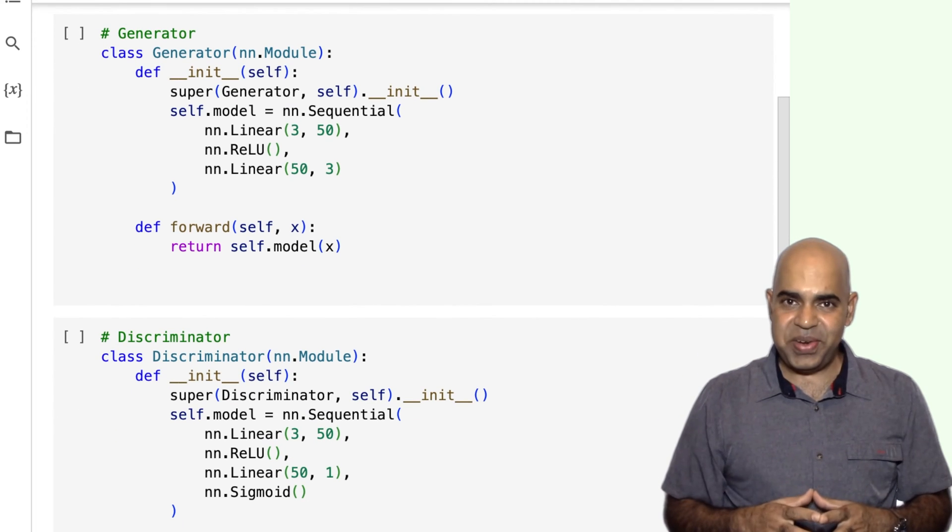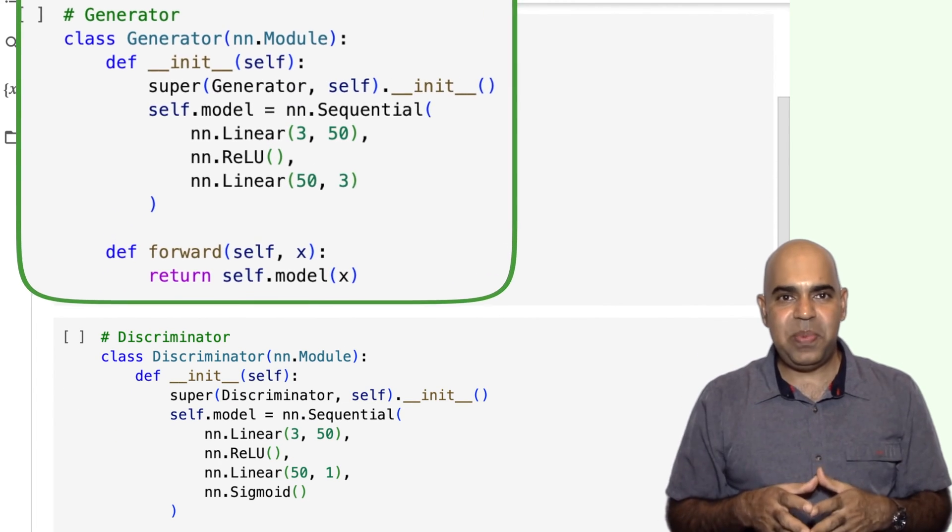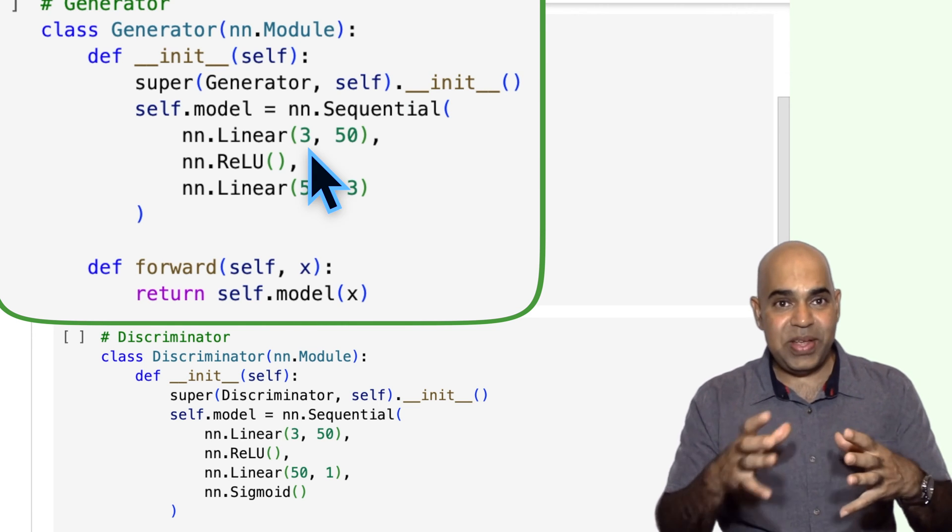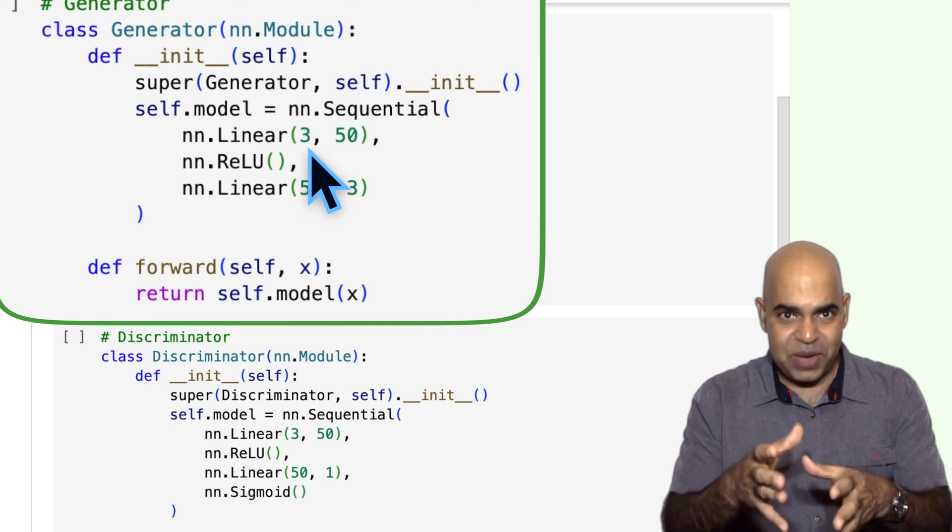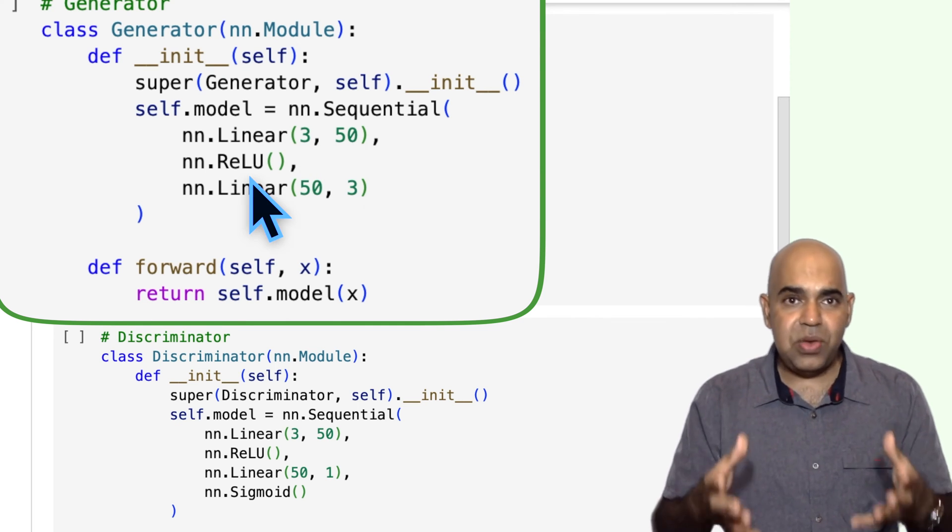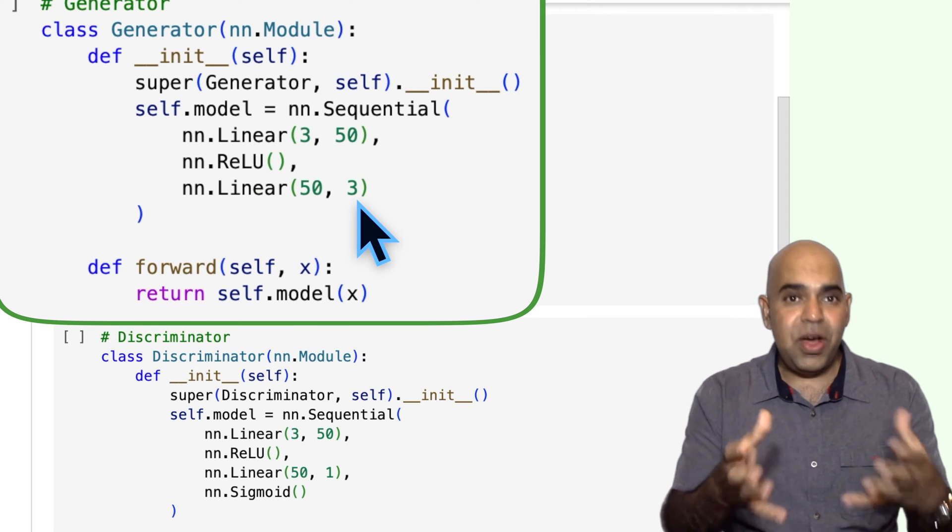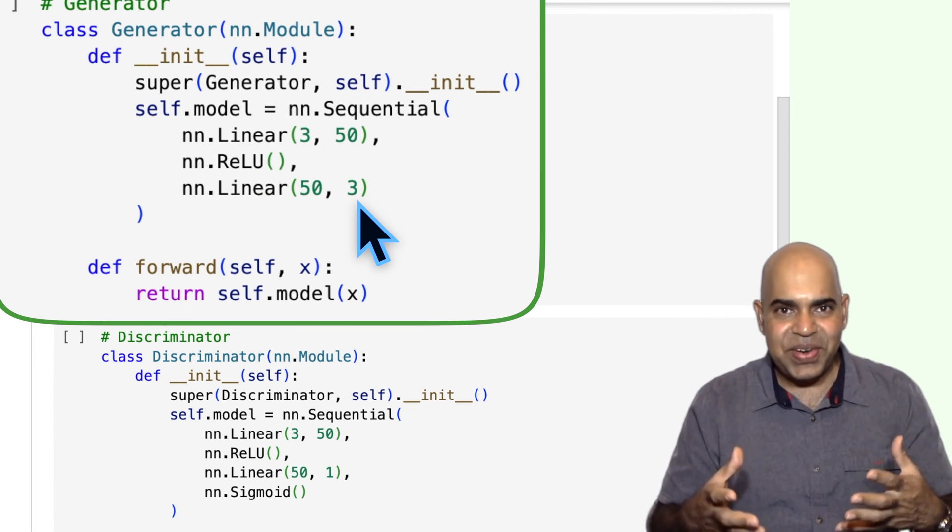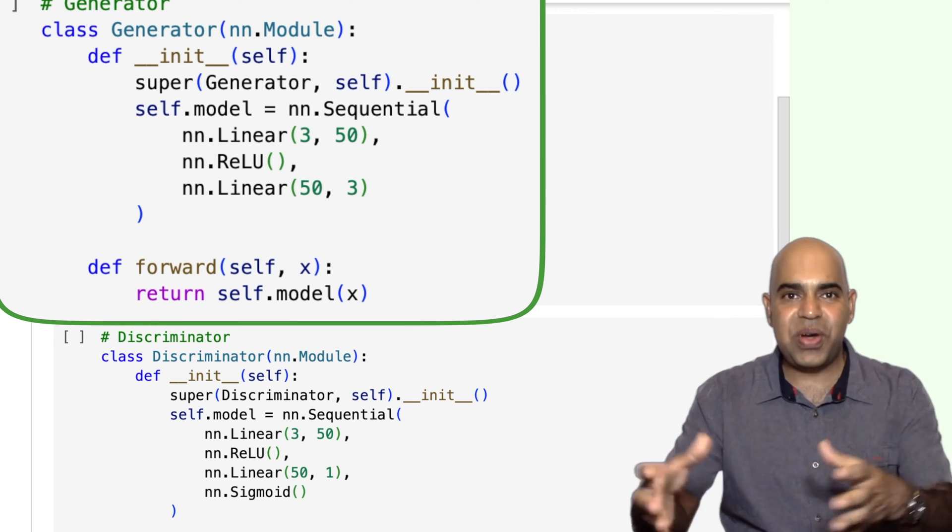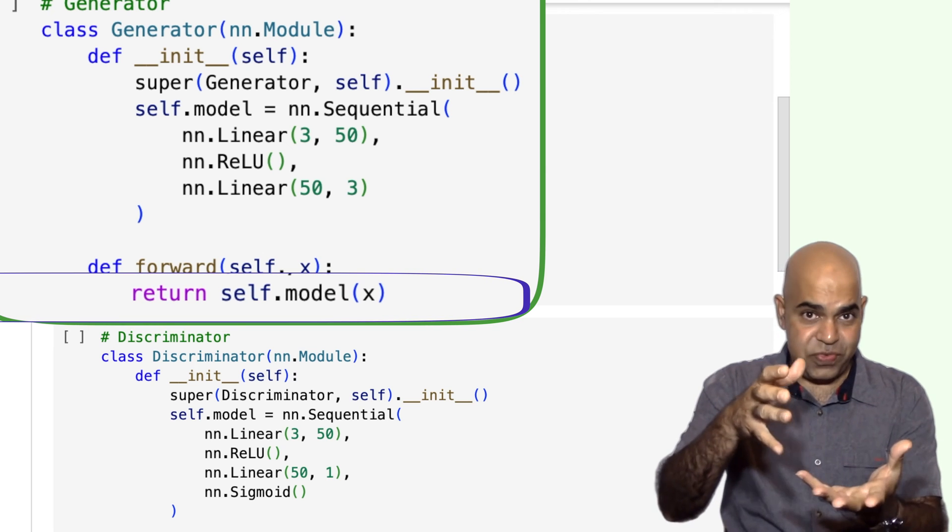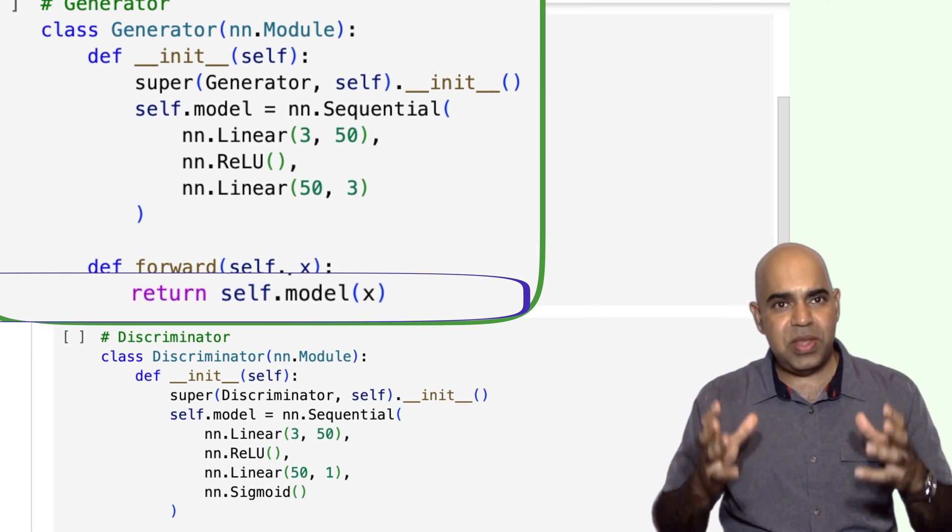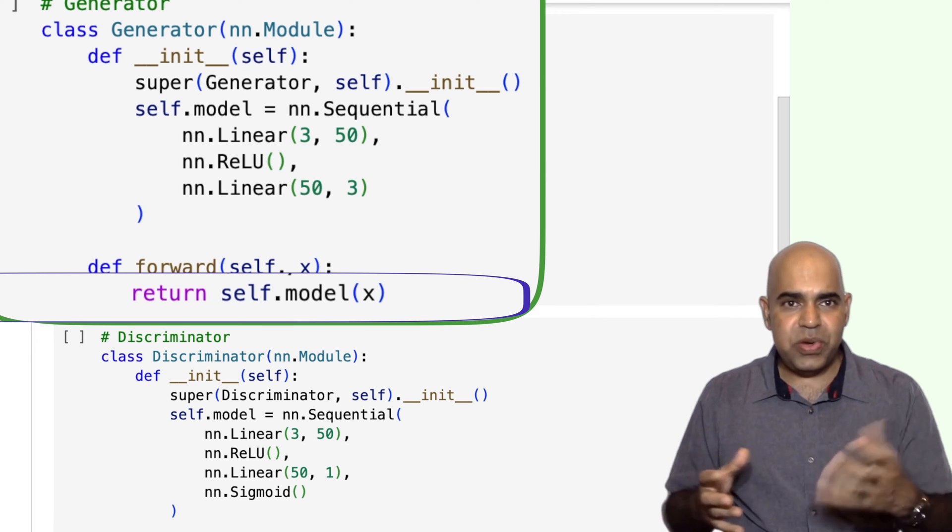Here is my generator. Notice that the generator is pretty simple. The generator has a simple feed-forward architecture, an input layer with 3 neurons because our input data has 3 columns, a hidden layer with 50 neurons, and a ReLU activation function. An output layer with 3 neurons because the generated data points will have the same number of features as our original training data. We return self.model with the parameter x.